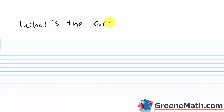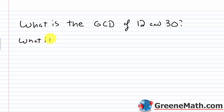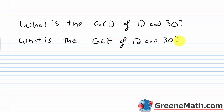If someone's asking you to find the greatest common divisor for two numbers, it's the same thing as if they asked you to find the greatest common factor for those two numbers. So if I asked: what is the greatest common divisor of 12 and 30, it's the same thing as asking: what is the greatest common factor of 12 and 30?